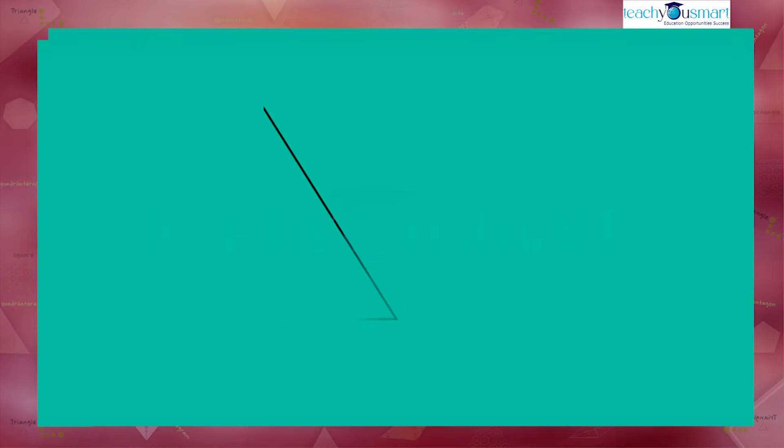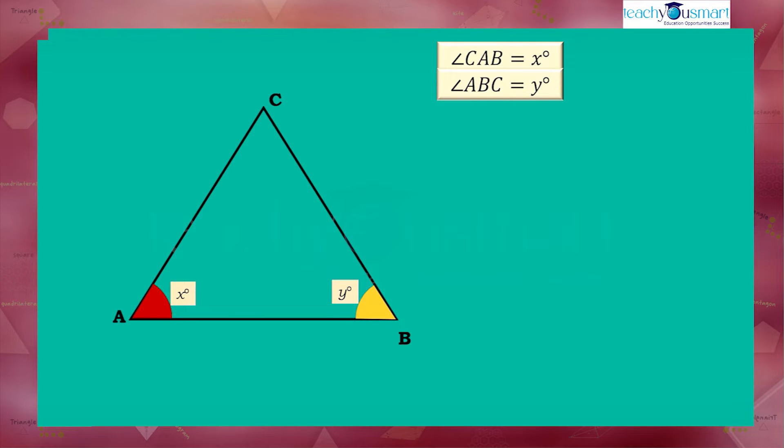Let's consider the measure of interior angles of triangle ABC as angle CAB equals X, angle ABC equals Y, and angle ACB equals Z.